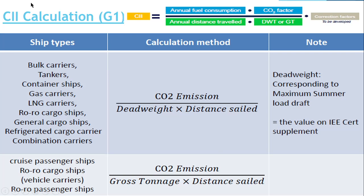Let's start today's video. The CII calculation is basically depending on ship type — like bulk carrier, tanker, container, gas carrier. For these, the formula has CO2 emission divided by dead weight multiplied by distance sailed. But for cruise ships, passenger ships, or ro-ro ships, it is GT — CO2 emission divided by GT multiplied by distance sailed. The dead weight here will be taken as mentioned in the maximum summer load draft. This is the general formula of the CII calculation.